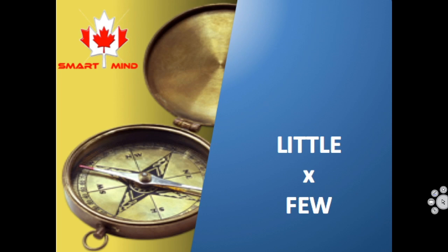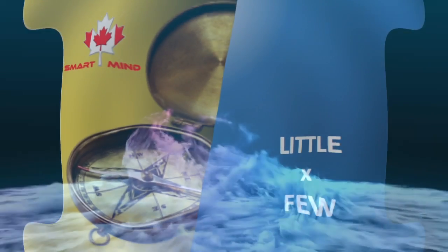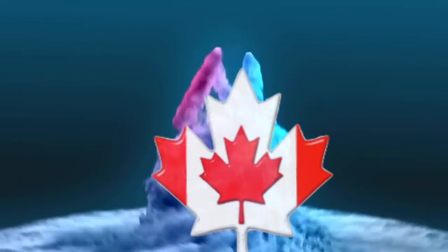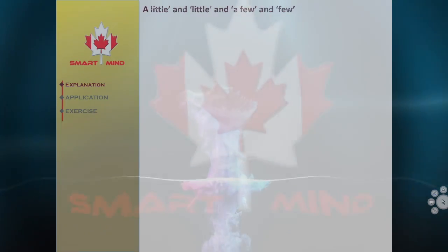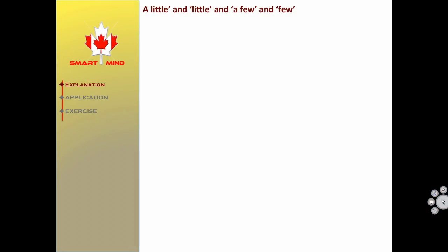Today we're going to learn 'little' and 'few' — 'a little' and 'little', and 'a few' and 'few'. We use 'a' or 'an' with several quantifiers. For example: 'a little', 'a few', 'a lot of'.